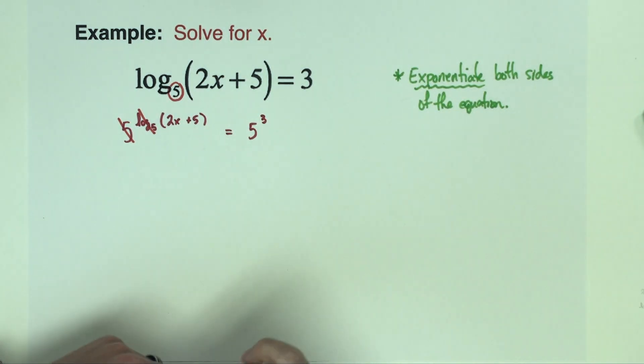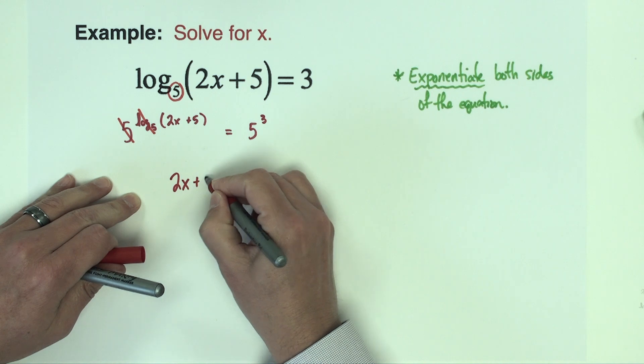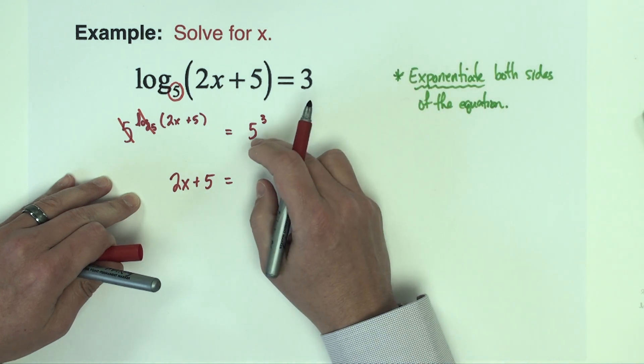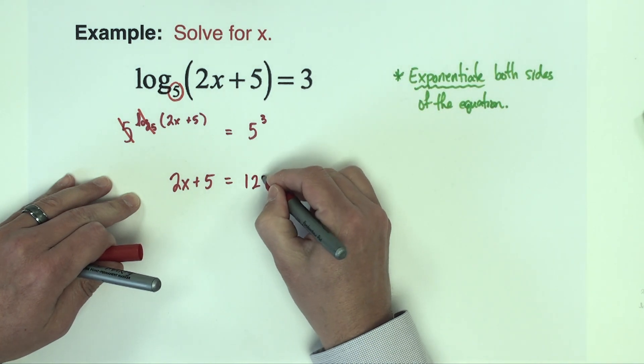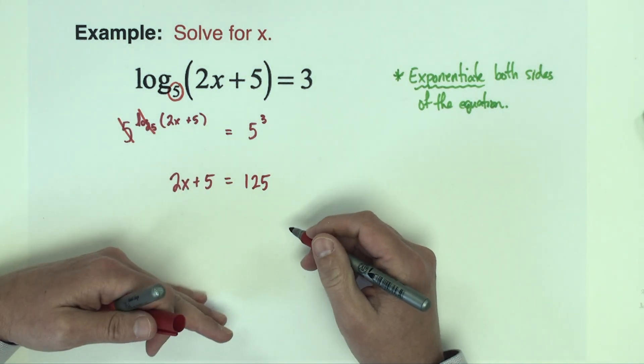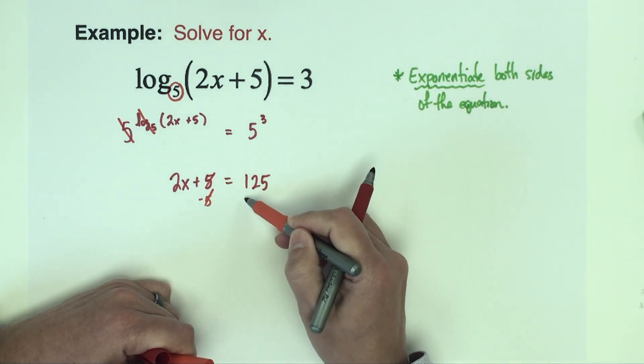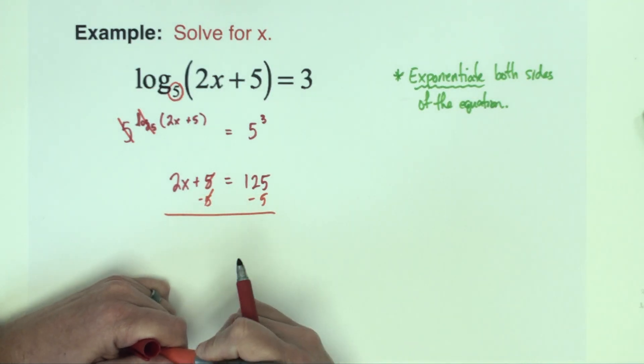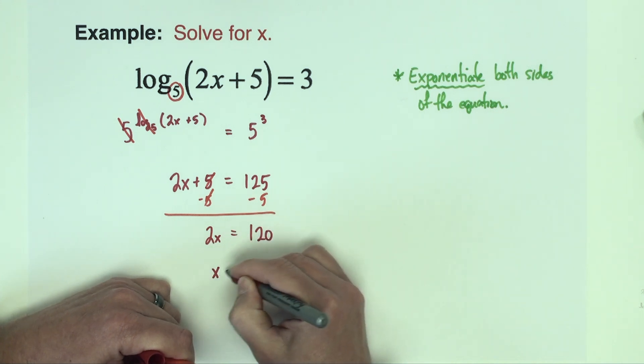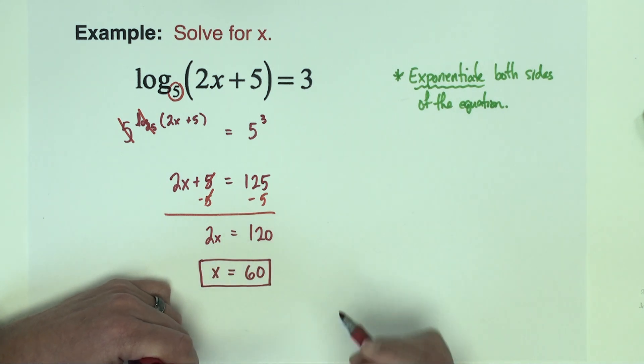And so that makes it very convenient. Now we can rewrite this equation without this stuff, we just have 2x plus 5 on the left hand side. On the right hand side we have 5 cubed which is 125. From here on down this is just a standard two-step equation. We're going to subtract 5 from both sides giving us 2x equals 120. Divide both sides by 2. 120 divided by 2 is 60. And that problem is finished.